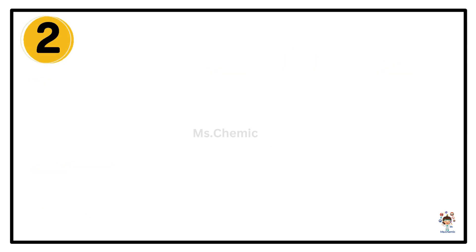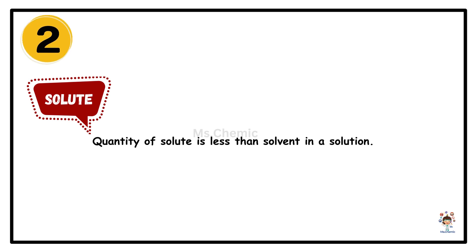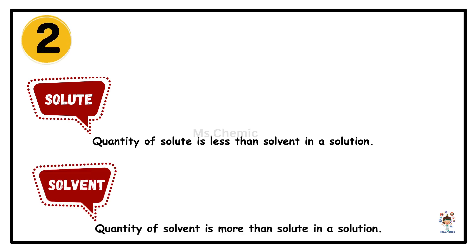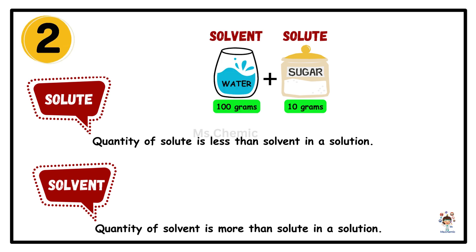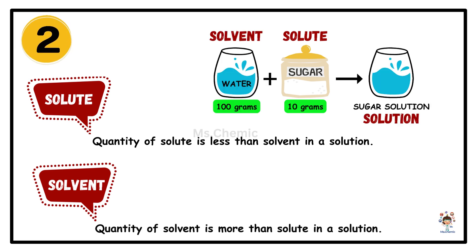Secondly, the quantity of solute is less than the solvent in a solution, whereas the quantity of solvent is more than the solute in a solution. For example, we add 10 grams of sugar to 100 grams of water. So, the quantity of water, the solvent, is more than that of the sugar, which is the solute.